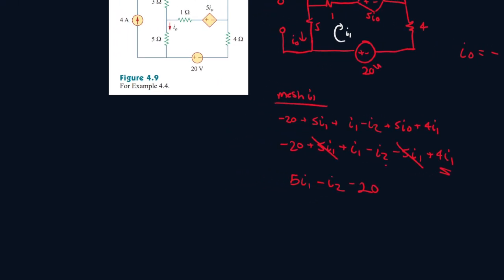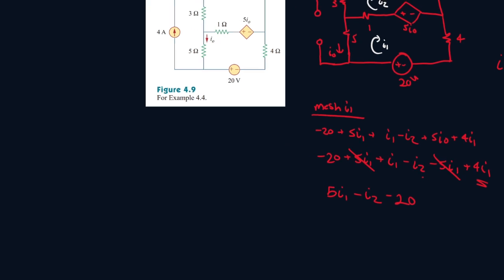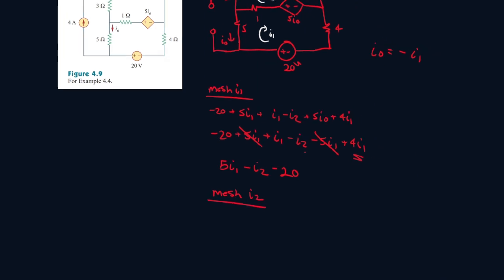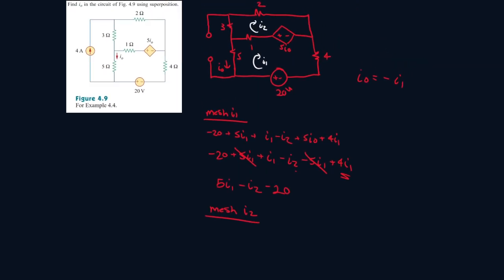Alright so that's our first equation done. So now for mesh I2, it's 2I2 minus 5I0, and recall I0 is minus I1, so it'll be plus 5I1. Alright, so 2,